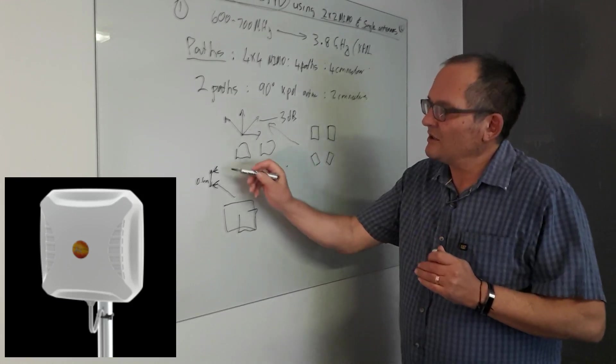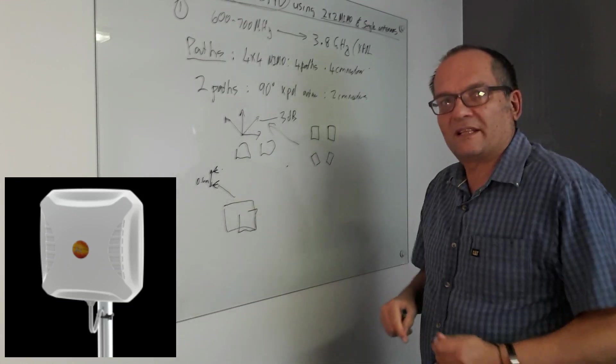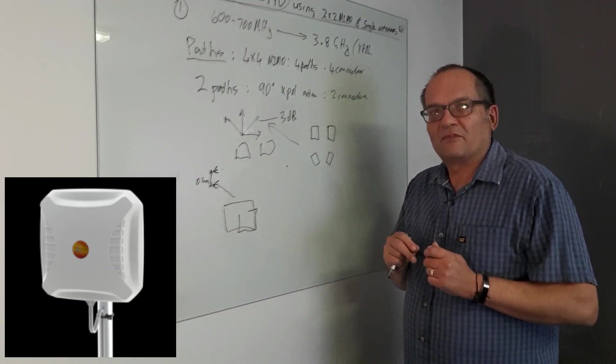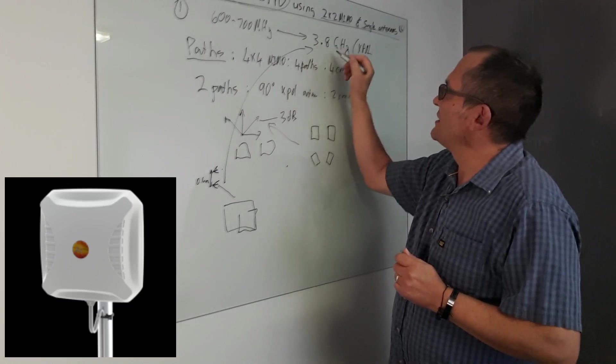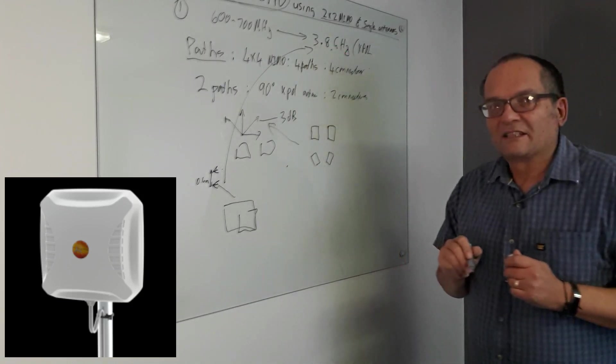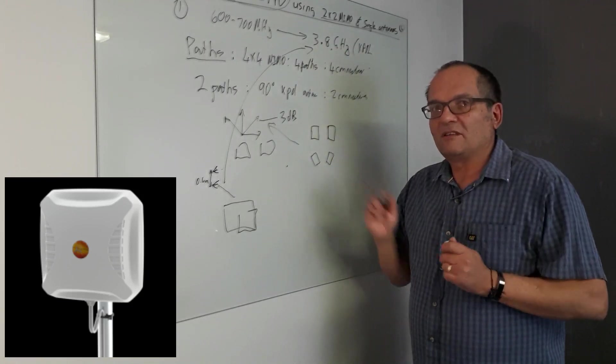But that now gives you 2x2, 2x2, you connect it together to a 4x4 5G modem. And remember the frequency bands. Not many people make at the moment antennas going up to there. So even though you don't have 4x4, you need 5G ready.